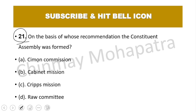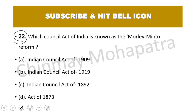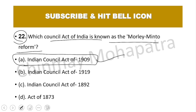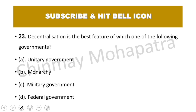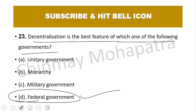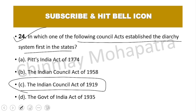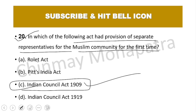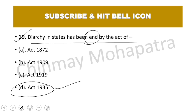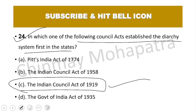Question number 21: On the basis of which recommendation was the constituent assembly formed? It was formed on the recommendation of the Cabinet Mission. Question number 22: Which council act of India is known as the Morley-Minto Reform? The right answer is the Indian Council Act 1909. Question number 23: Decentralization is the best feature of which type of government? Decentralization — distribution of power — is the best feature of the federal government. Question number 24: Which council act established the Dyarchy system first in the states? The Dyarchy system was established under the Indian Council Act 1919, and ended under the 1935 Act.